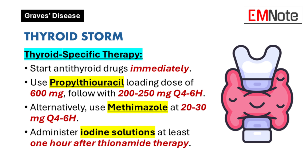Methimazole is another option, with an initial dose of 20 to 30 mg every 4 to 6 hours. Iodide solutions should be administered at least one hour after starting thionamide therapy to block the release of thyroid hormones. Options include Lugol's solution or saturated solution of potassium iodide.